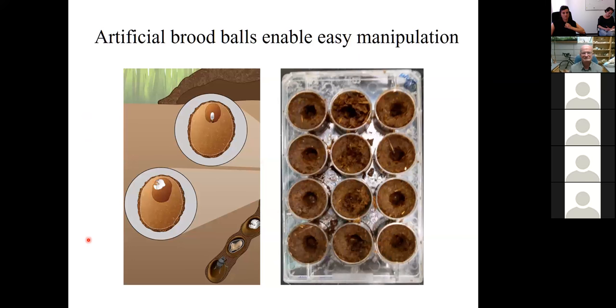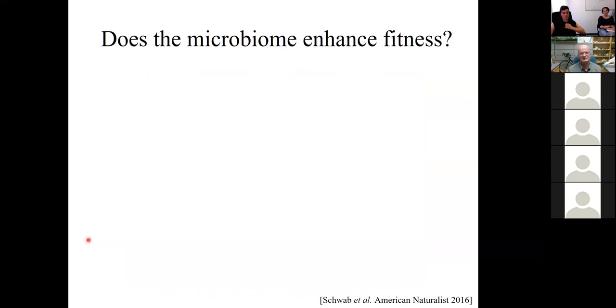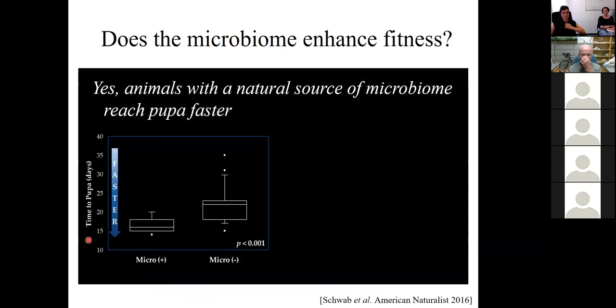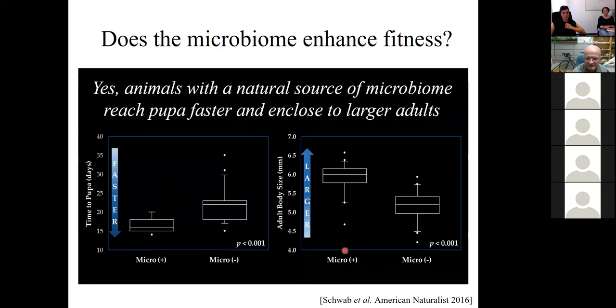And so first we wanted to know, does it matter? Do the larvae actually care about the microbiome? Here we take advantage of the fact that we can create artificial brood balls in the lab in which larvae can develop perfectly, happily, and complete their entire life cycle. We can standardize this. And now we can give them a pedestal or not, or swap it around, or do all sorts of interesting manipulations. So first question, does the microbiome enhance fitness? The answer is yes. Animals that are given a maternally derived microbiome, micro plus, develop faster than individuals that don't have it. And they also arrive at larger body sizes, micro plus, larger, micro minus, smaller. Next question, are we sure it's about the microbes? Because maybe there's just some awesome nutrient in that pedestal, some superfood?